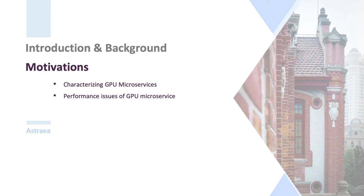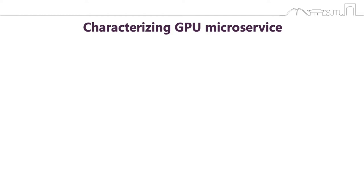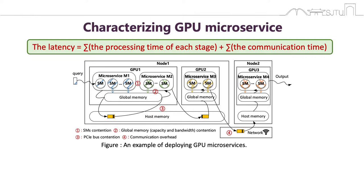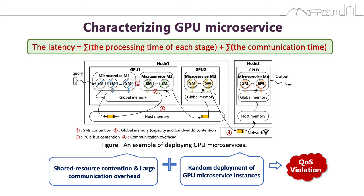Now we talk about the motivation of our work. We mainly discuss some performance issues of GPU microservices. A single microservice stage often underutilizes a powerful GPU, so multiple microservices will be deployed on a GPU, especially when the load is low. The figure shows an example where an application with a four-stage pipeline is deployed on three GPUs from two nodes. The latency of a multi-stage user-facing query is determined by the processing time of each stage and the communication time between stages. The tail latency is strict due to dependencies between microservices and their back-pressure effects.